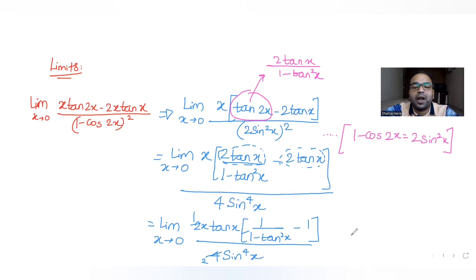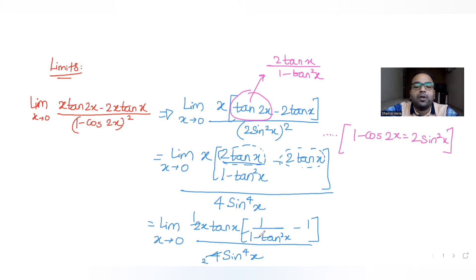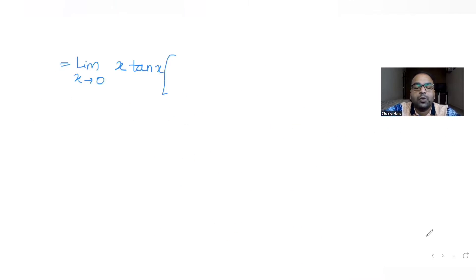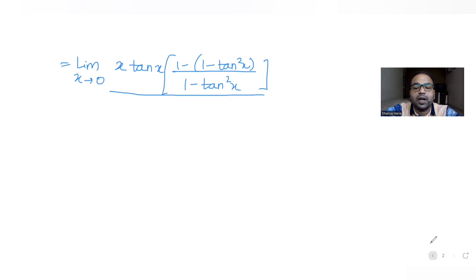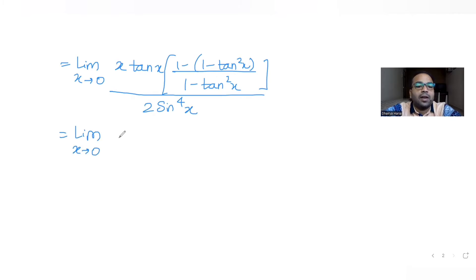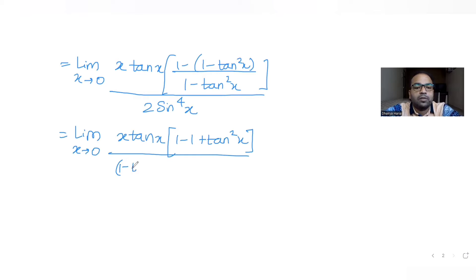Further simplifying the bracket, I multiply the expression by 1, rewriting it as (1 minus (1 minus tan²(x))) all upon (1 minus tan²(x)). This gives 1 minus 1 plus tan²(x), so the numerator simplifies to just tan²(x).